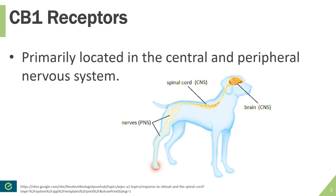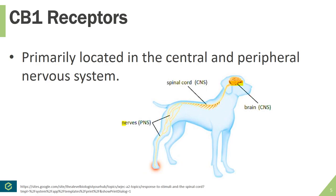CB1 receptors are primarily located in the central and peripheral nervous systems. Here in this picture of a dog, you can see its brain, spinal cord, and peripheral nerves drawn. The central nervous system refers to the brain and spinal cord, labeled as CNS. The peripheral nervous system refers to the nerves coming off the spinal cord and innervating places around the body — going down the legs, front limbs, and throughout — labeled as PNS.